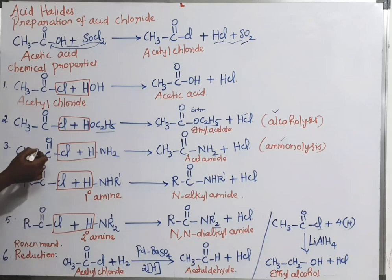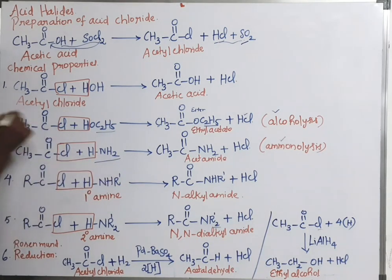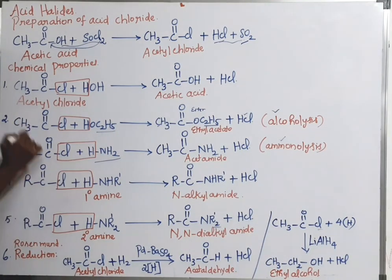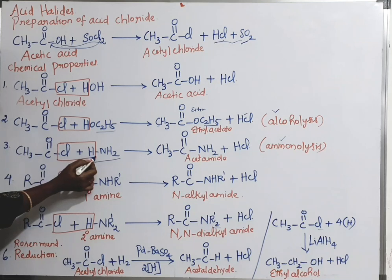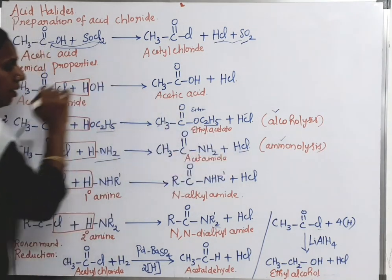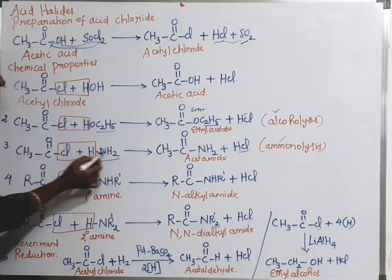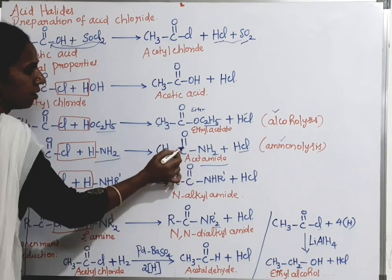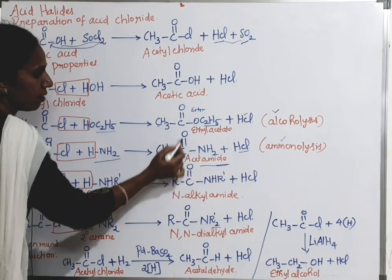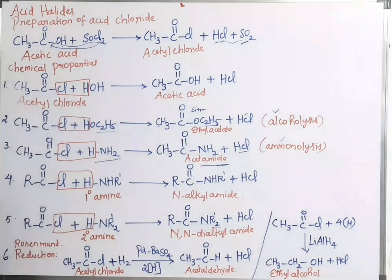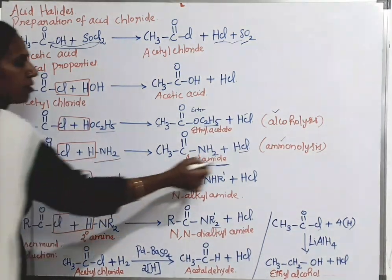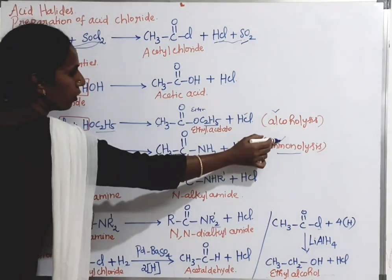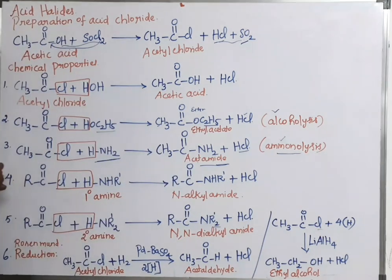The third reaction: the same acid chloride reacts with ammonia (NH3), written as HNH2. The chlorine and hydrogen are removed as HCl. The remaining portion is CH3C(=O)NH2 — this is called an amide. The CONH is the amide group, and CH3CONH2 is acetamide. This reaction is called aminolysis, and amide is formed in this reaction.